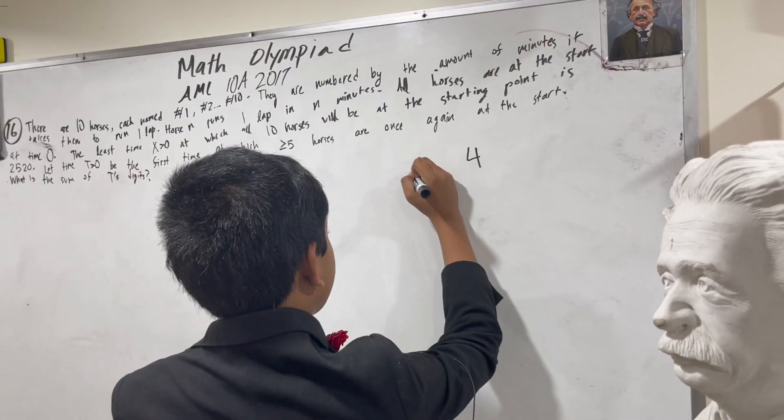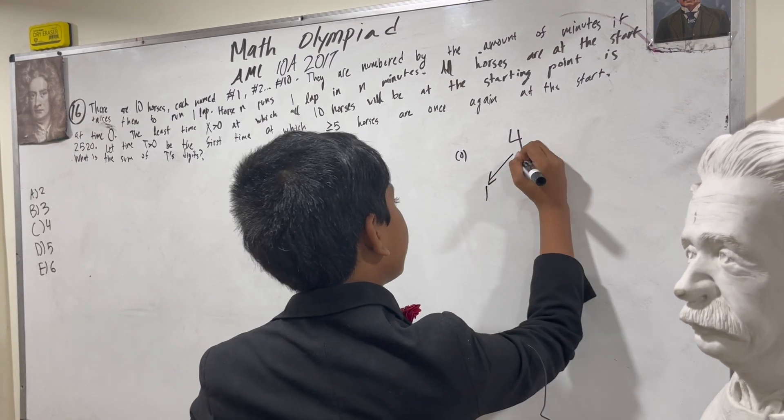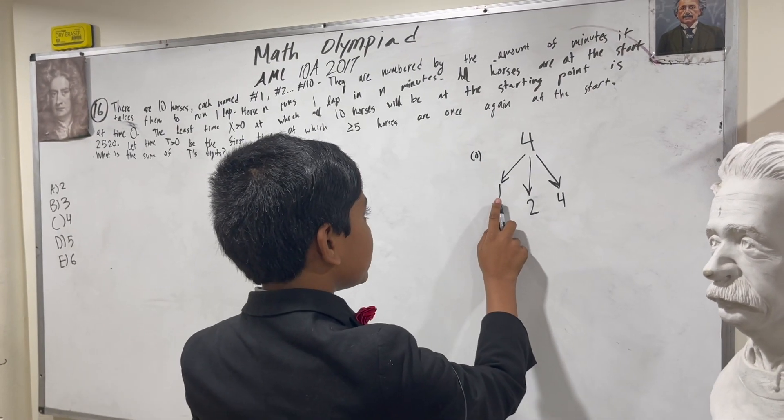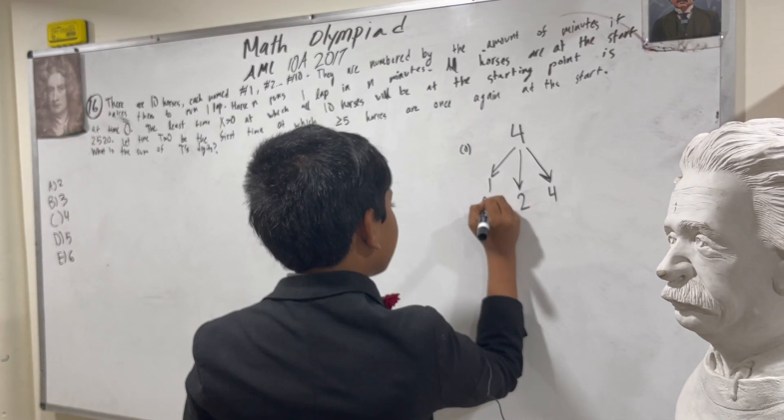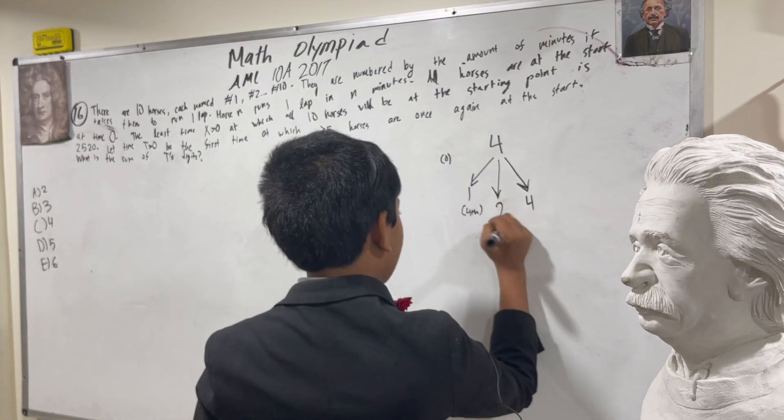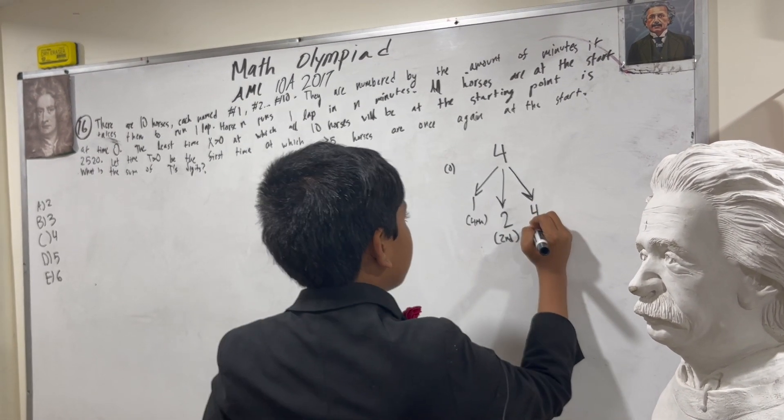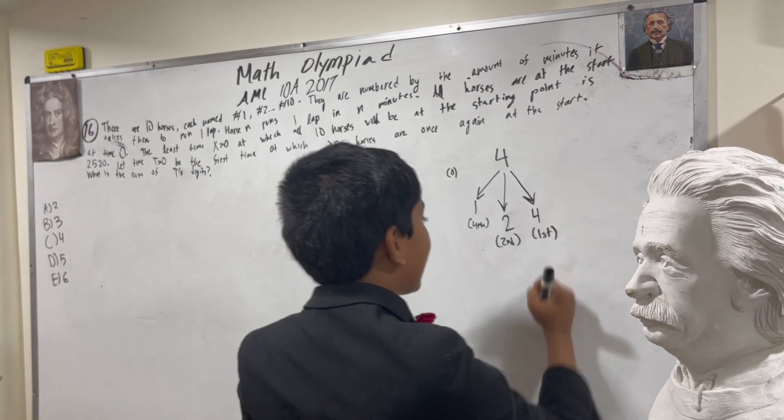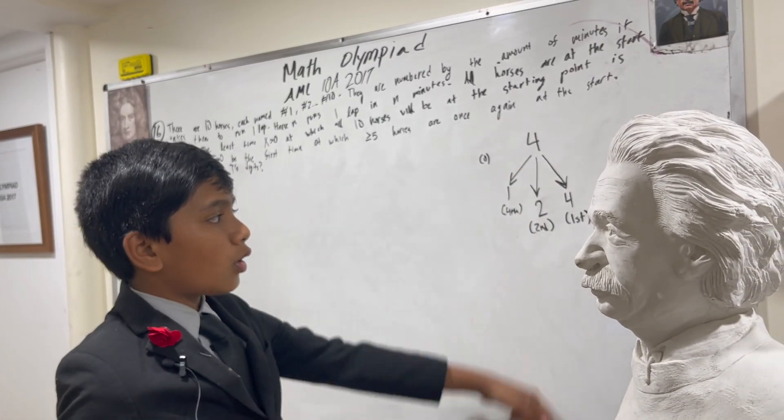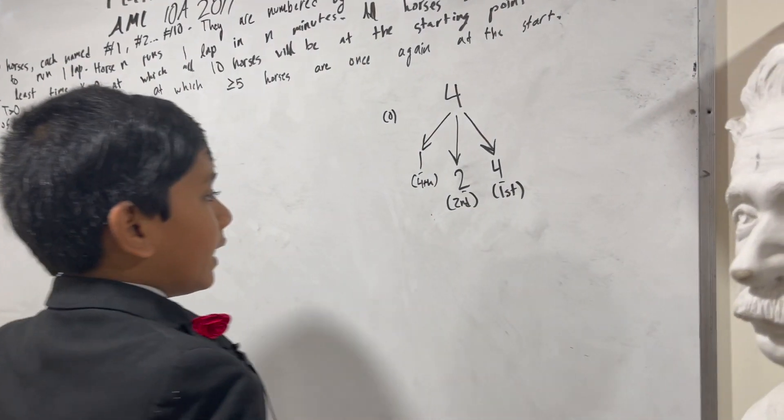Four. We're not going to count zero because there is no horse zero. Four has the factors one, two, and four. That means that horse one will be at the start at T equals four, it will have done its fourth lap. Horse two will be at the start at minute four, it will have finished its second lap. And horse four will have been at the start at minute four, it will have finished its first lap. Because there are three integer divisors of four, that means that there are three horses that meet up at that time.